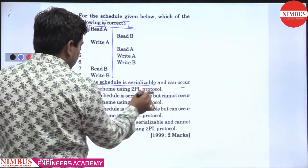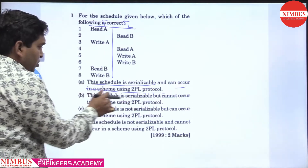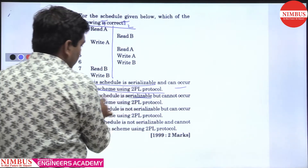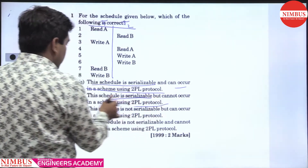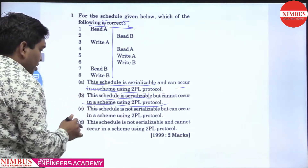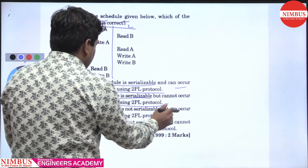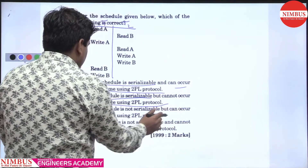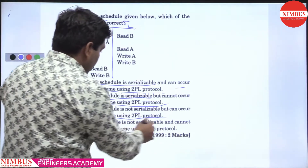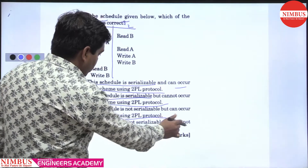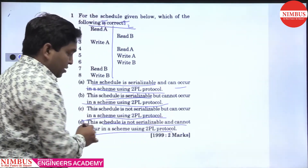Option B: this schedule is serializable but cannot occur under the 2PL scheme. Option C: this schedule is not serializable but can occur under the 2PL protocol scheme. Option D: this schedule is not serializable and cannot occur under the 2PL protocol.